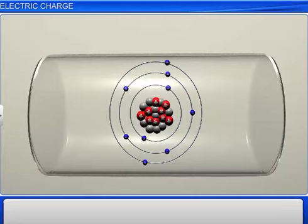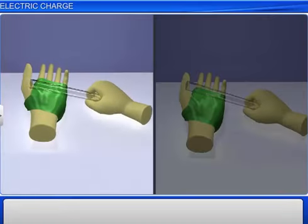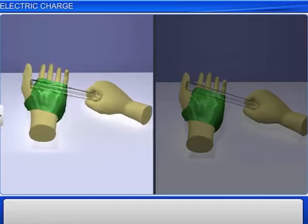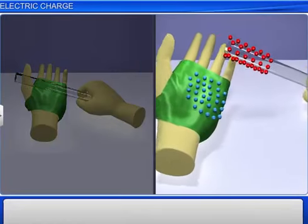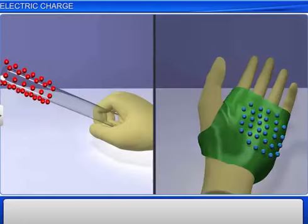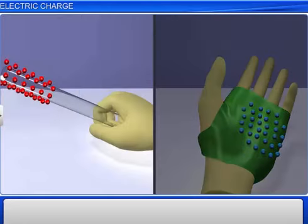When we rub one material against another material, the material in which electrons are relatively loosely bound to its atoms readily loses a few of its electrons to the other material. The material that lost electrons now has a deficit of electrons and hence becomes positively charged, and the one that gained electrons becomes negatively charged.